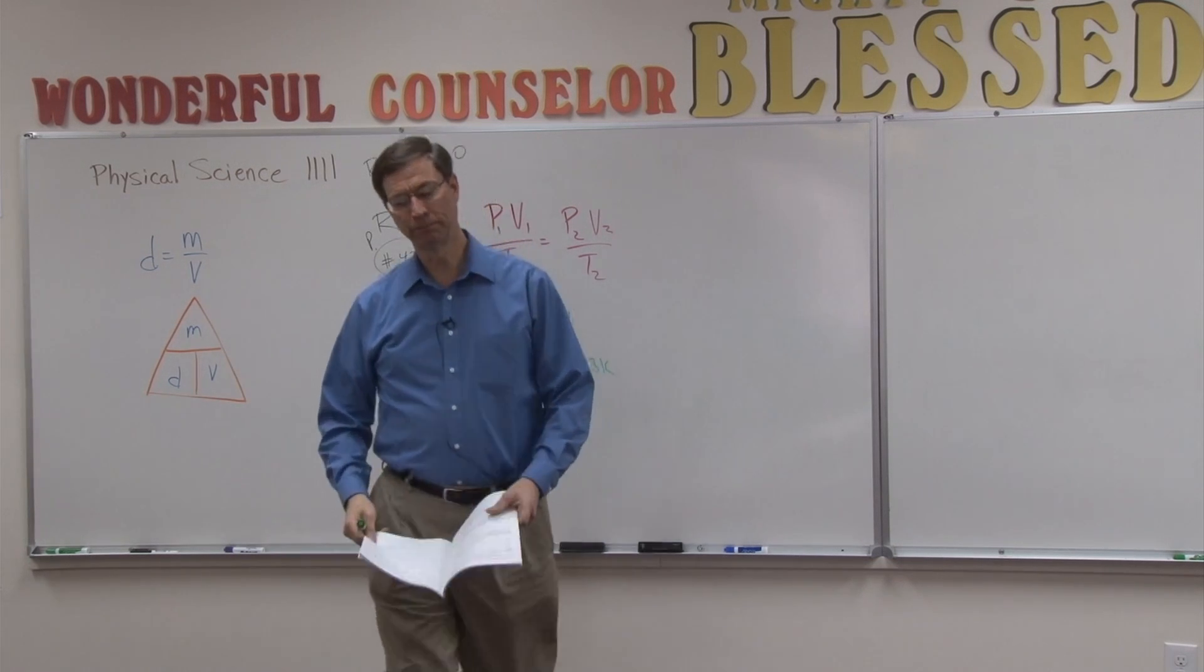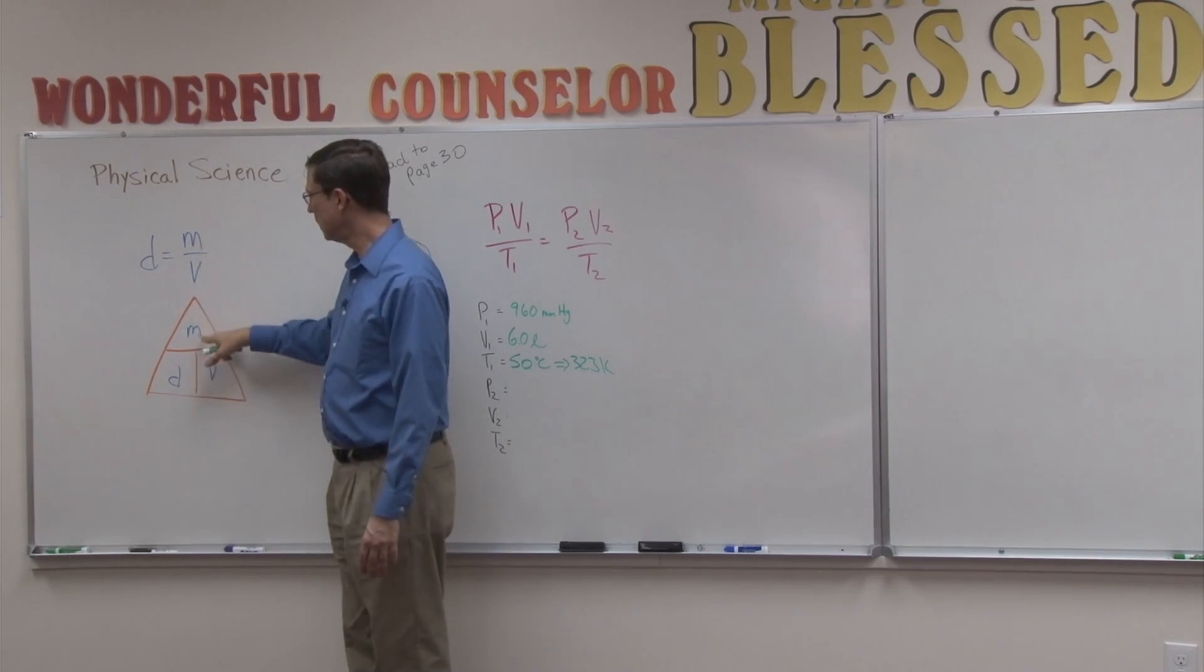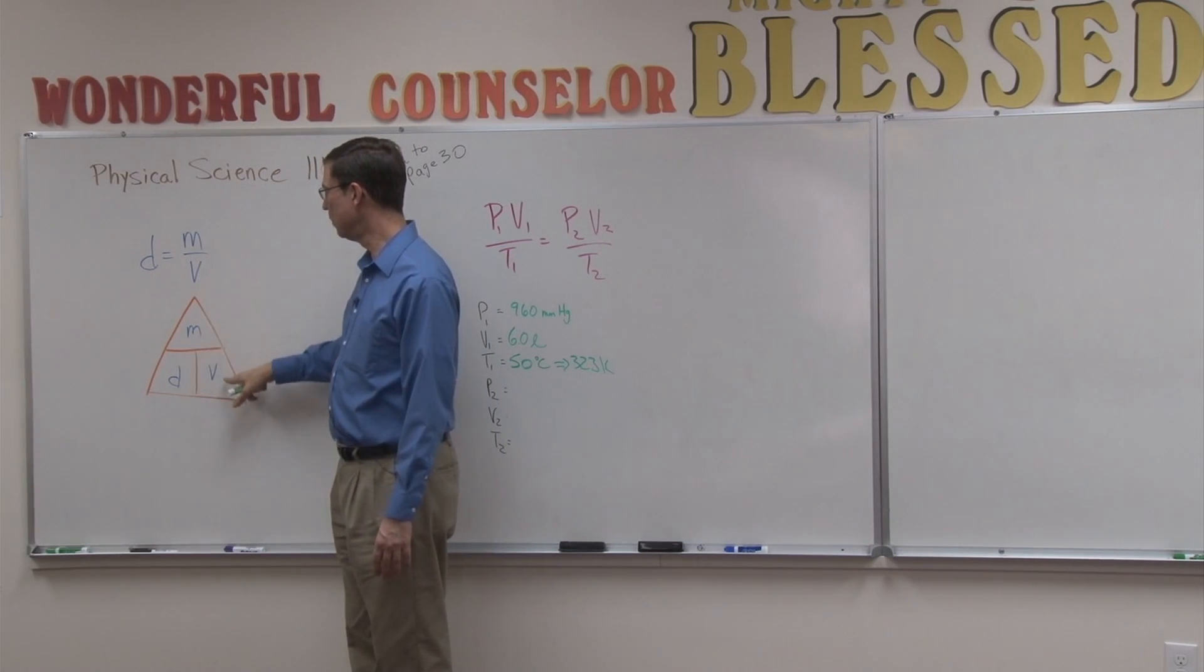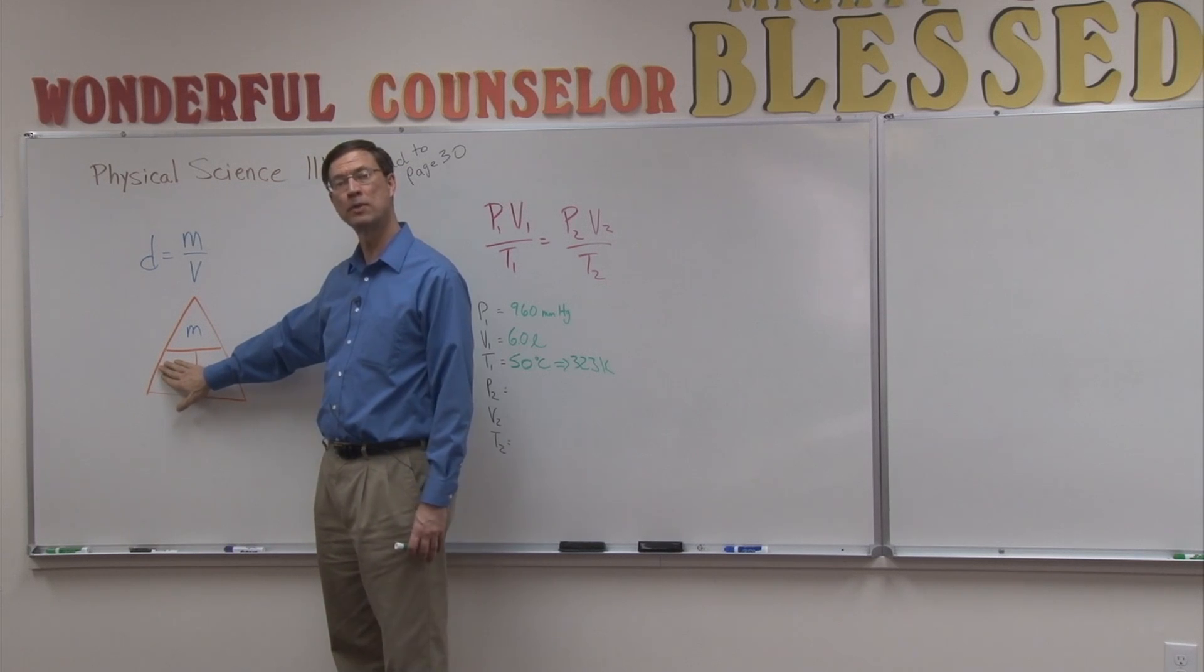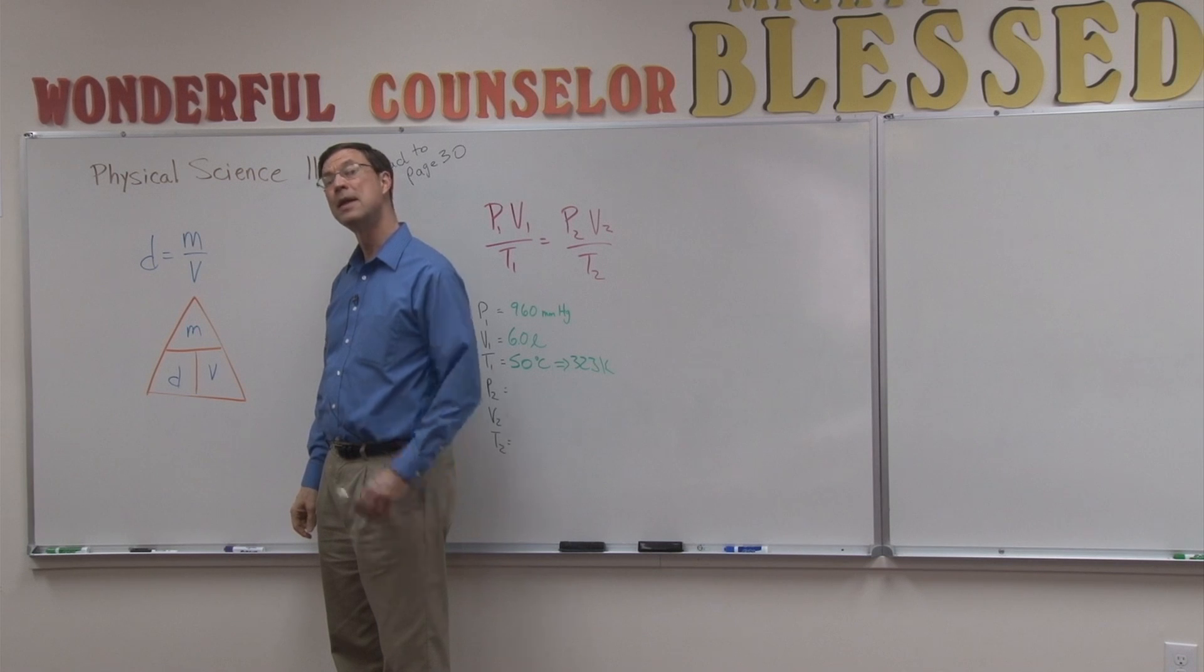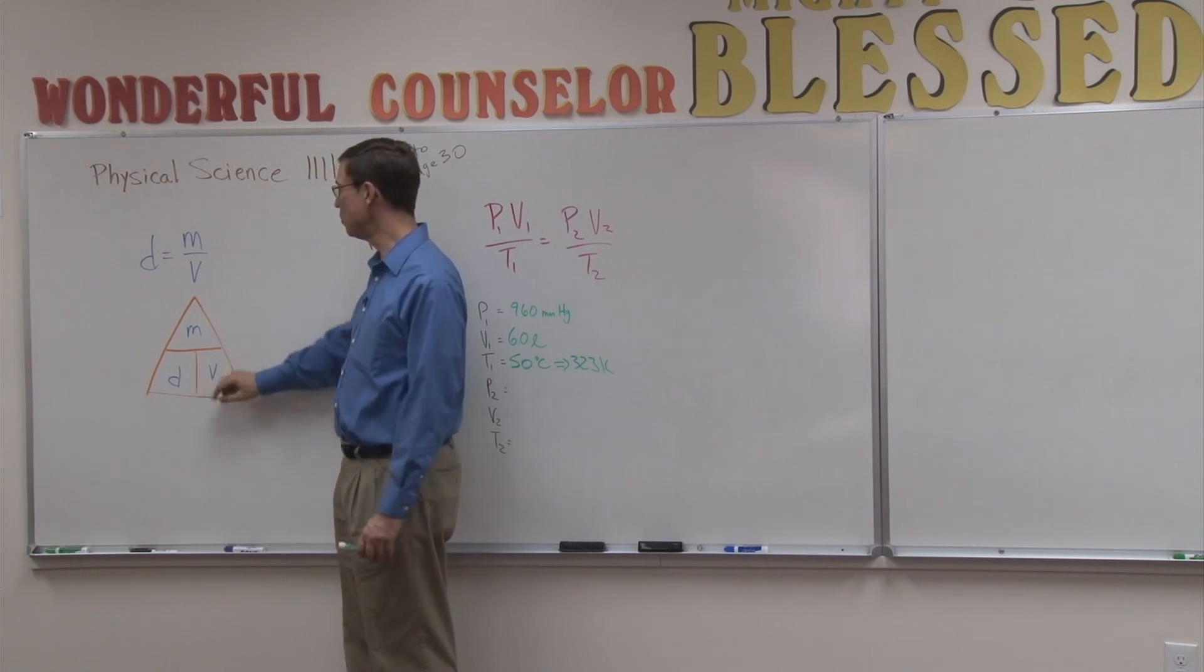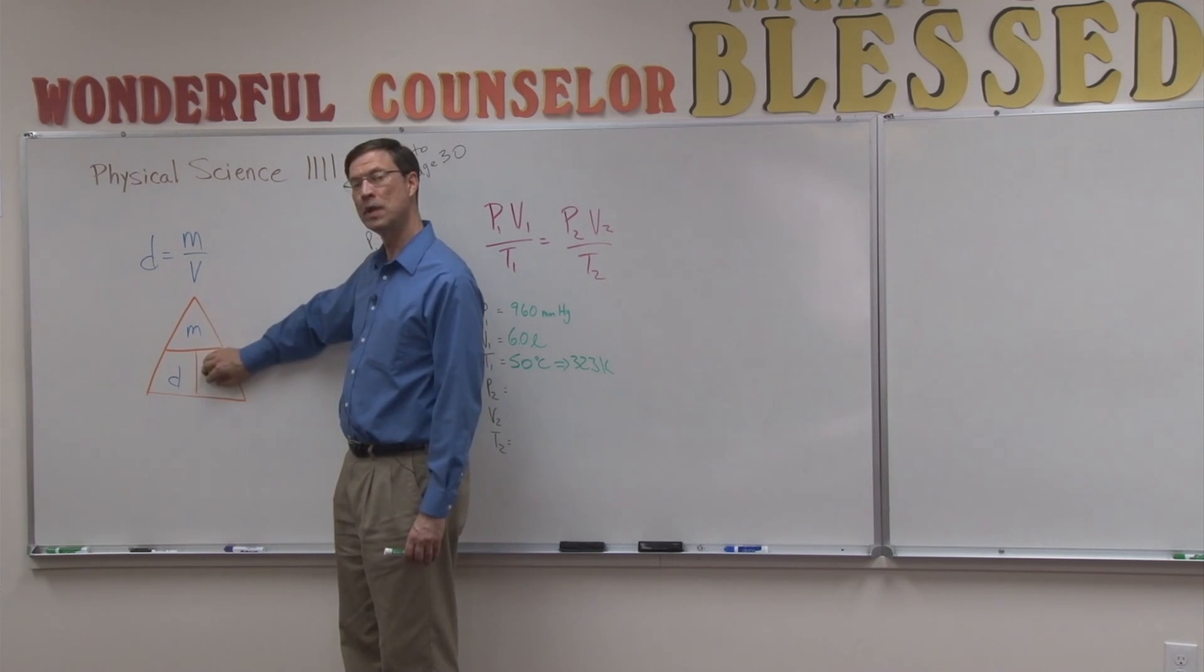If I know the mass and I plug that in and then plug in the volume down here, I can cover up density. If I'm solving for density, I have mass over volume, so I would divide. If I wanted to find the volume, but I knew the mass and the density, take mass, divide by density. See, mass over density, so divide, and you'll have the volume.